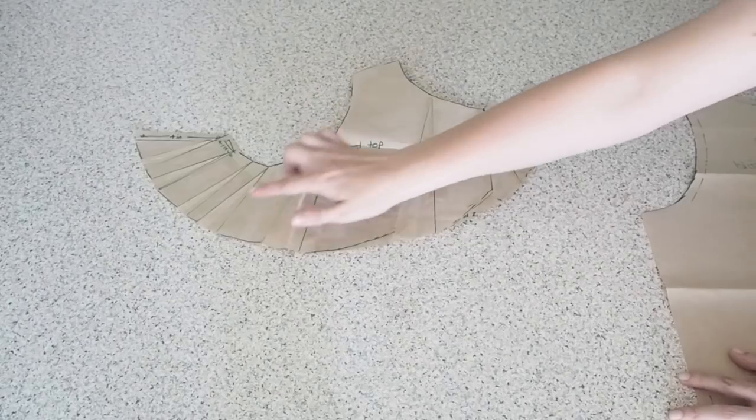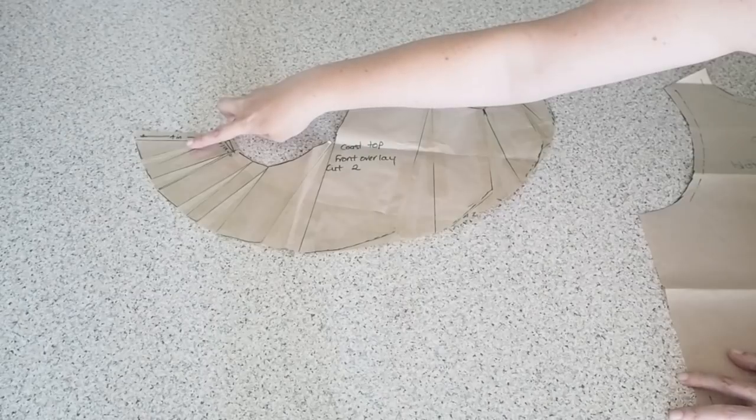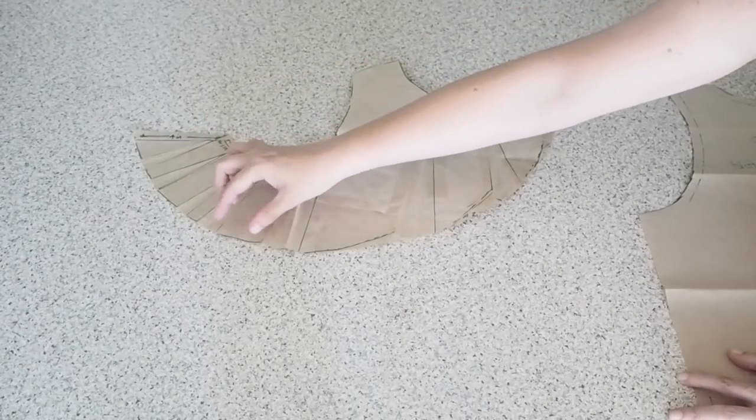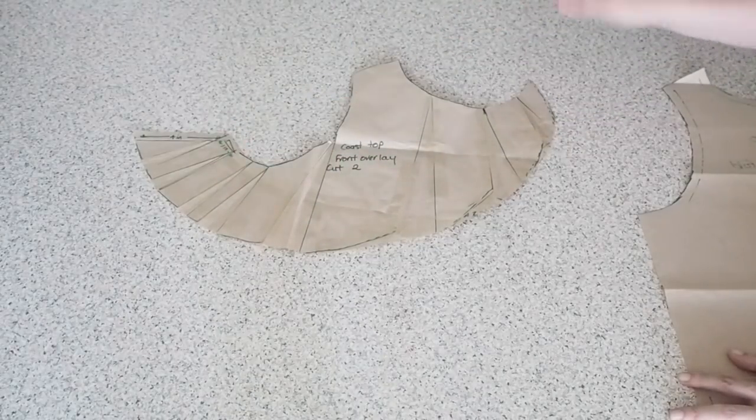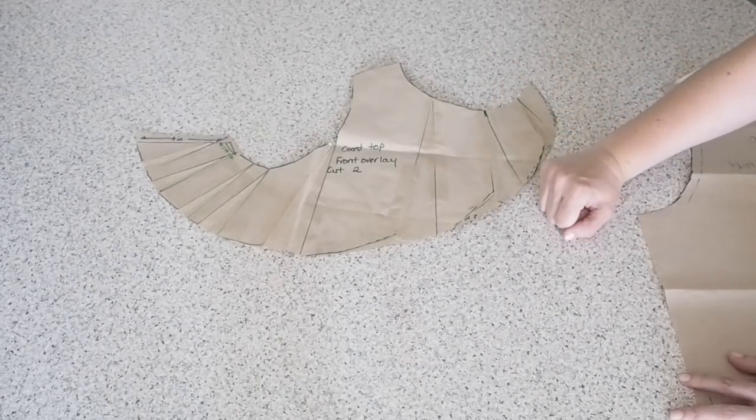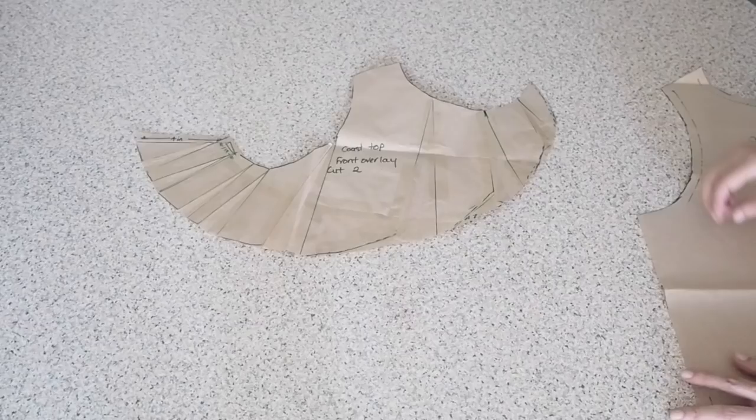And then for this pattern piece, this is a little top I made recently that I did a video on, which I shall link below, the white cotton top. And this was an overlay fluted pattern piece that I added to that top. And I'm showing it here because I just wanted to mention that you don't have to have your slash and spread lines equidistant. You can really decide yourself where you want your fluted pieces to be or if you want one area to be more fluted than another.